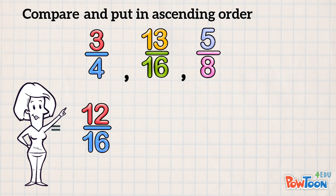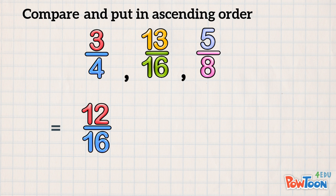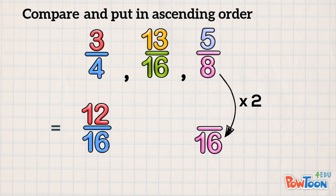Notice that I put it directly under the original. That shows us it's the equivalent of 3 quarters! And now for 5 eighths! To get a denominator of 16, we multiply 8 by 2. So the numerator is 5 times 2. That's 10.